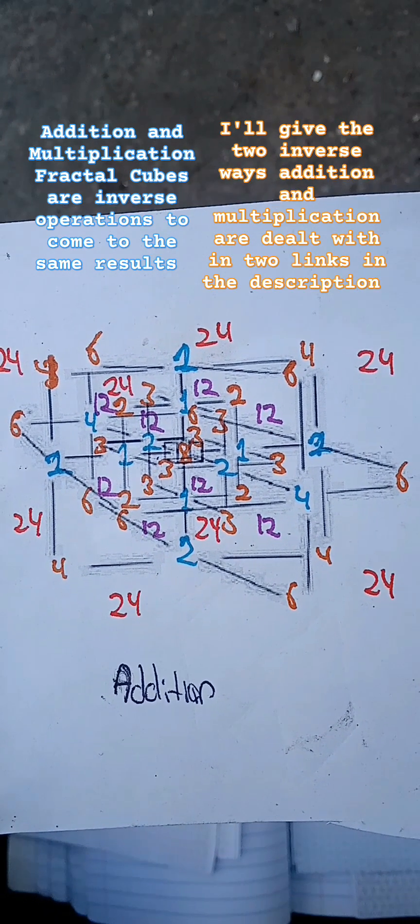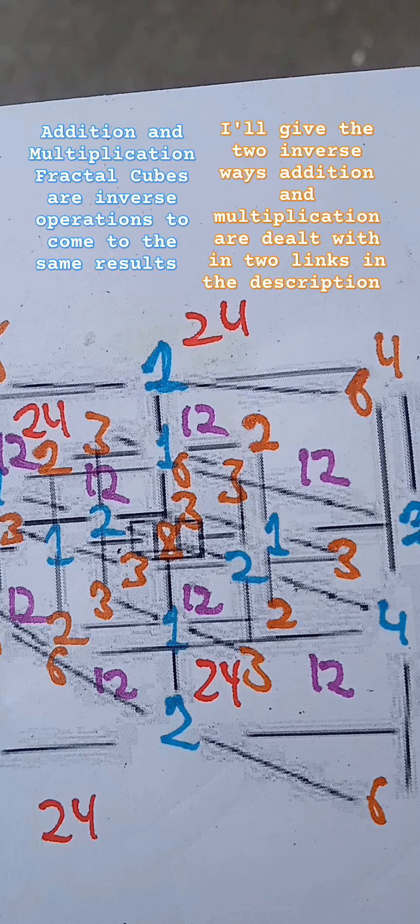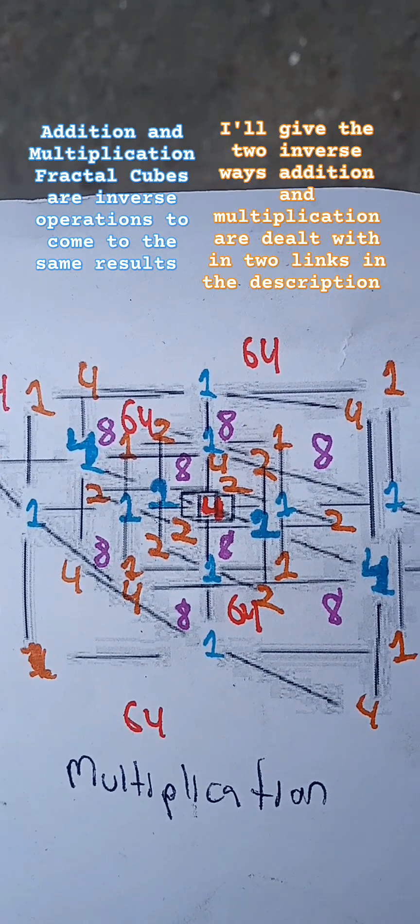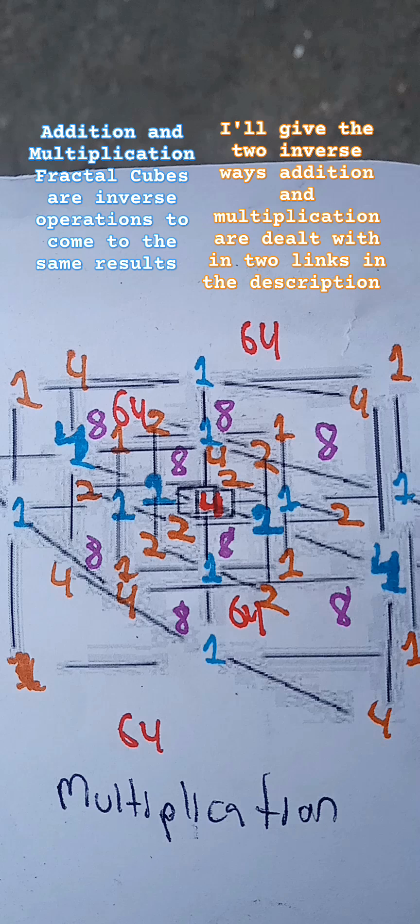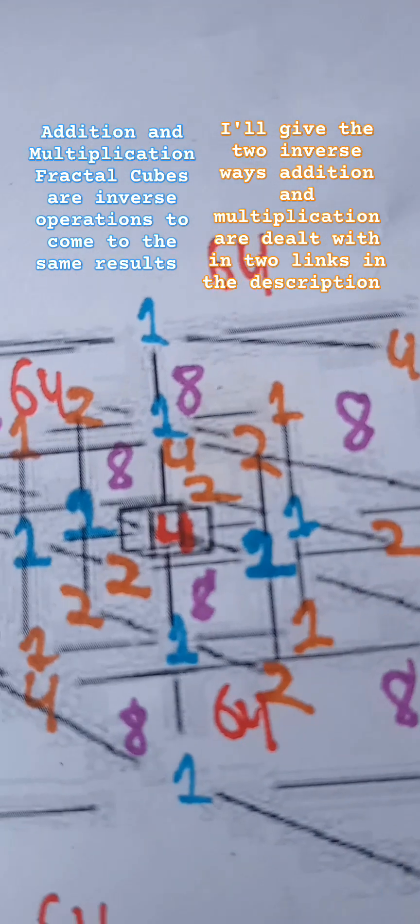In addition, the magic ghost number Q has a central ghost number of 8. The multiplication magic ghost number Q with the same primary numbers in blue, inner primary numbers, has a central ghost number of 4.